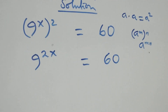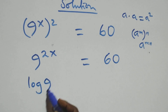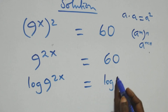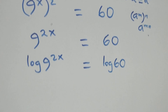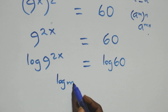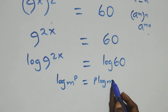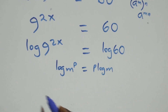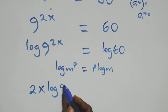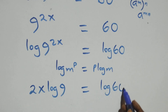Here we take the log on both sides: log of 9 raised to power 2x equals to log 60. We then apply the power rule of logarithms — log m raised to power p is the same thing as p log m. So this becomes 2x log 9 equals to log 60 on this side.